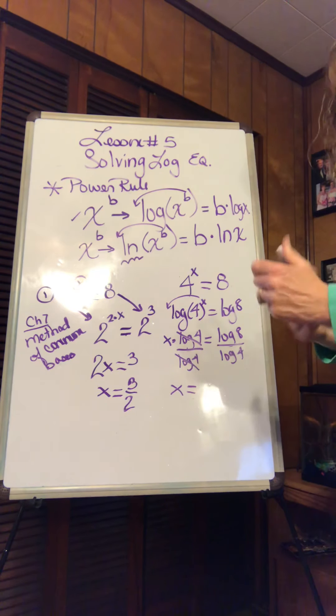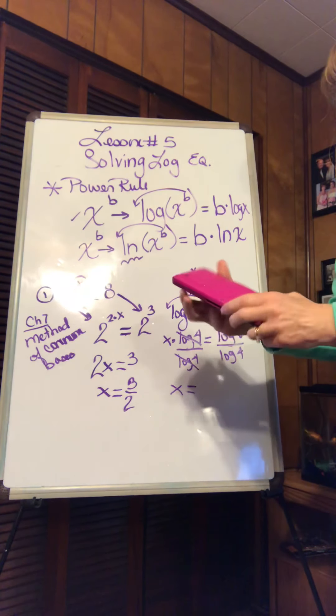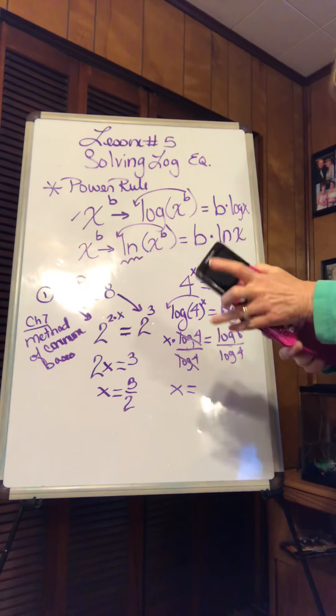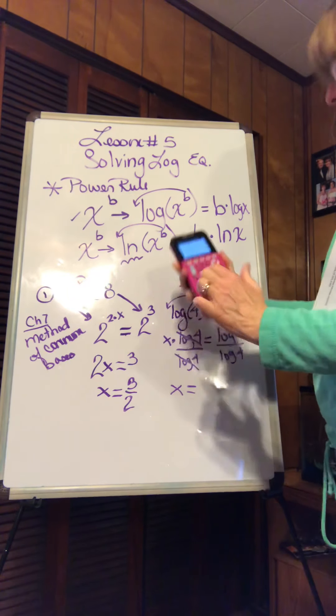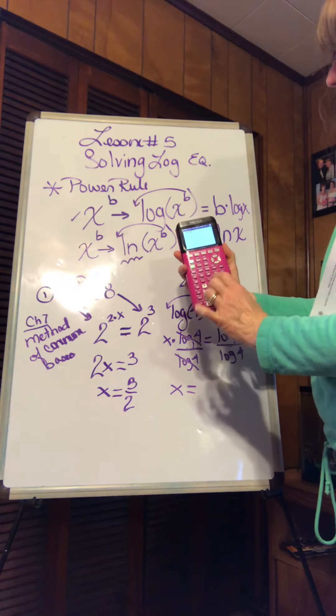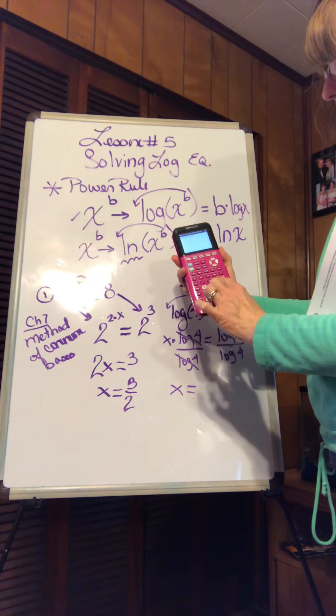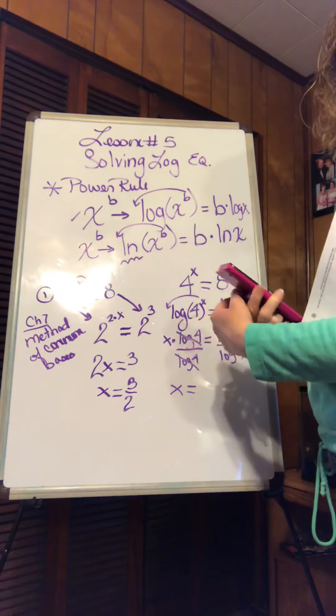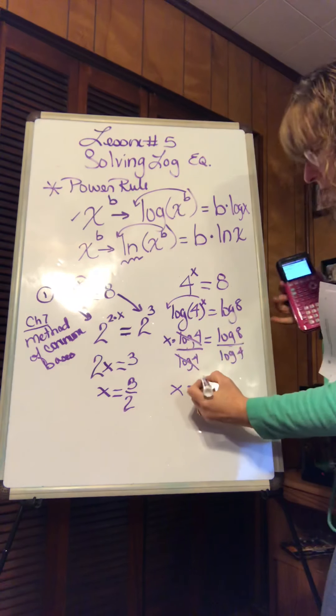Then I have to type that into my calculator. You can even do this on your cell phone calculator as long as you turn your calculator to the side. But everybody should have by now downloaded a graphing calculator app. So now I have the log of 8, don't forget to close the parenthesis, divided by the log of 4. There I get 1.5. If I hit math, enter, enter, there I am back at 3 halves.